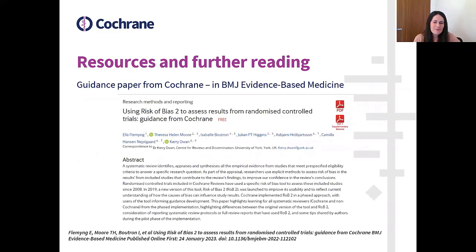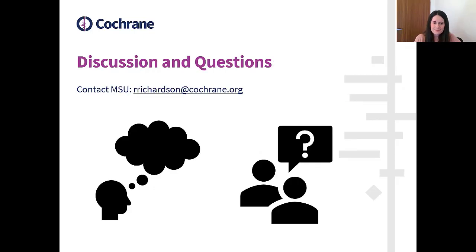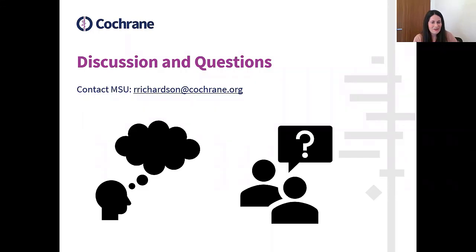Also worth noting is a recently published paper in the BMJ Evidence-Based Medicine journal, published last month by authors within Cochrane. It discusses using Risk of Bias 2, compares it with the old tool, and gives tips on how to use it — a really good paper to read. The Bristol team are also planning more papers on each domain with tips and guidance, which we'll make available on the Cochrane Methods website. Feel free to contact us at the Methods Support unit if you have any further questions after this webinar; we're happy to discuss any comments or questions.